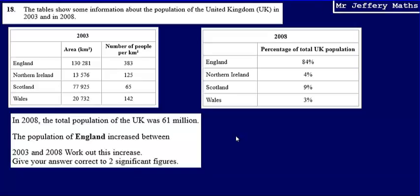This is question 18. The table shows some information about the population of the UK in 2003 and in 2008. In 2008 the total population of the UK was 61 million, and the population of England increased between 2003 and 2008. I'm asked to work out this increase.